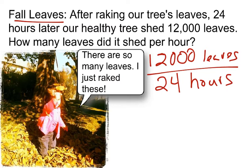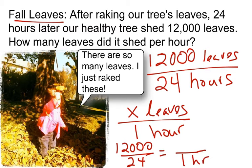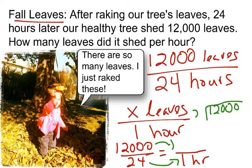What I want to know is how many leaves fell in one hour. We have a ratio comparison: for every 12,000 leaves I have 24 hours, and I need to get that down to one hour. How do I get from 24 to one? I divide by 24. So I divide 12,000 by 24 to find my unit rate.